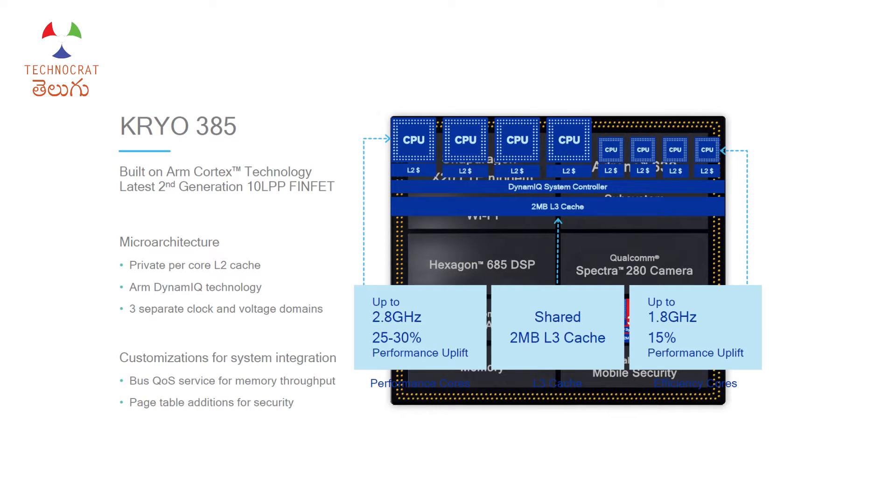What is clock speed? How do we measure it? We measure it in gigahertz. How does it relate to the processor?